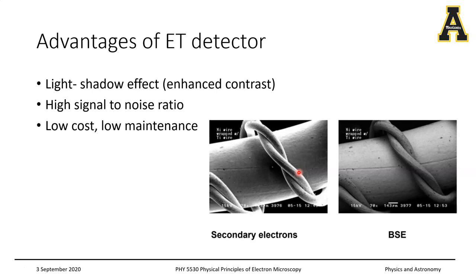Other advantages of ET detectors include an excellent signal-to-noise ratio, giving crisp images. They also rely on very old and robust technology — scintillators and photomultiplier tubes — that are extremely well understood, very low cost, and low maintenance, which is why Everhart-Thornley detectors remain extremely common in electron microscopes. In the next class we'll talk more about this — until then, bye-bye.